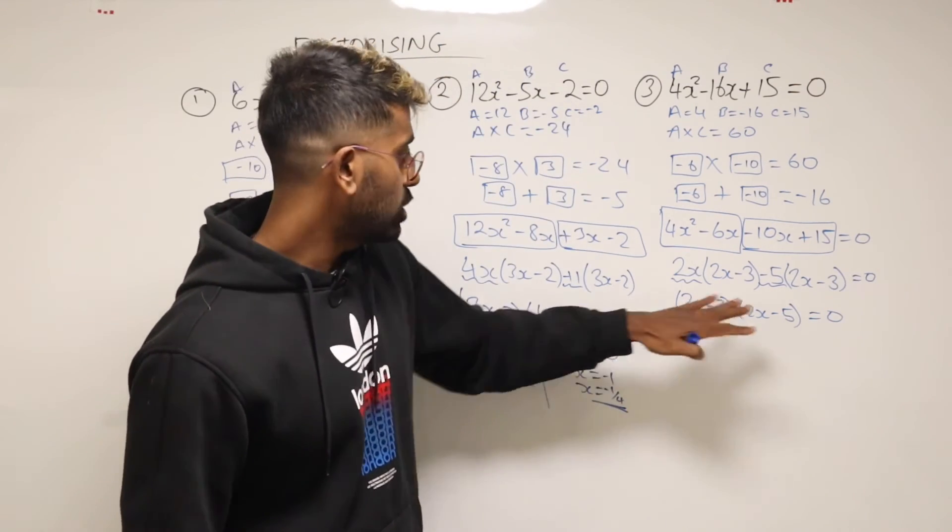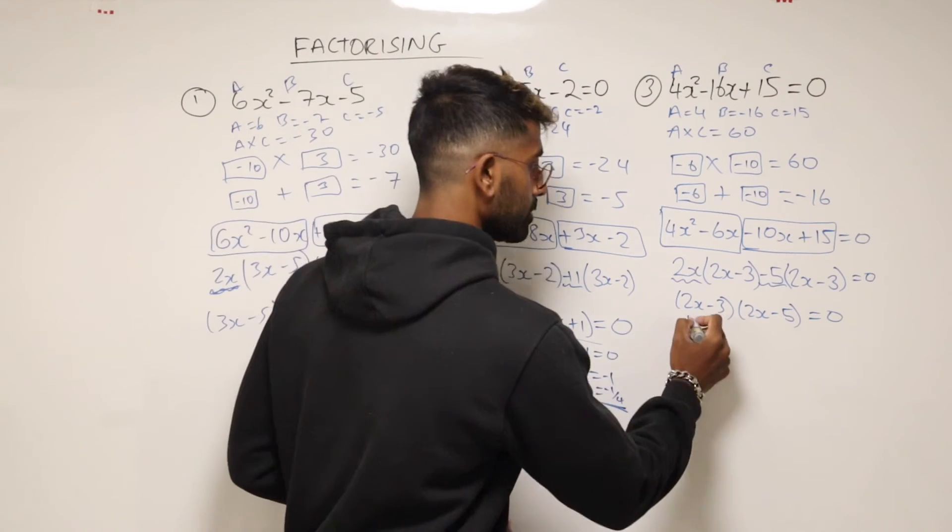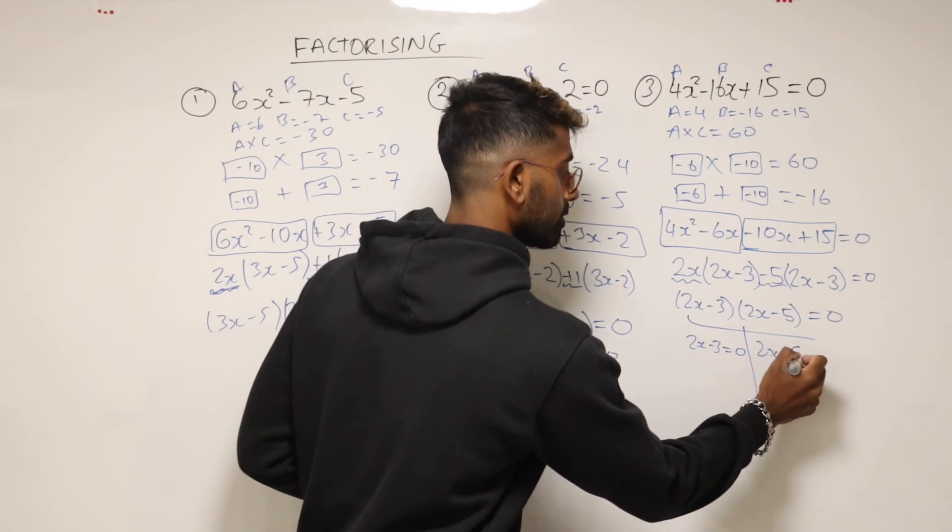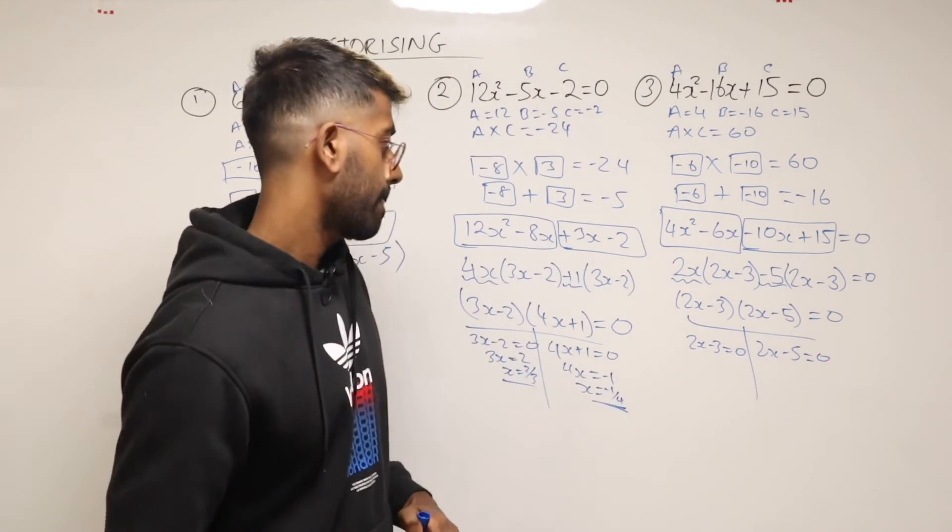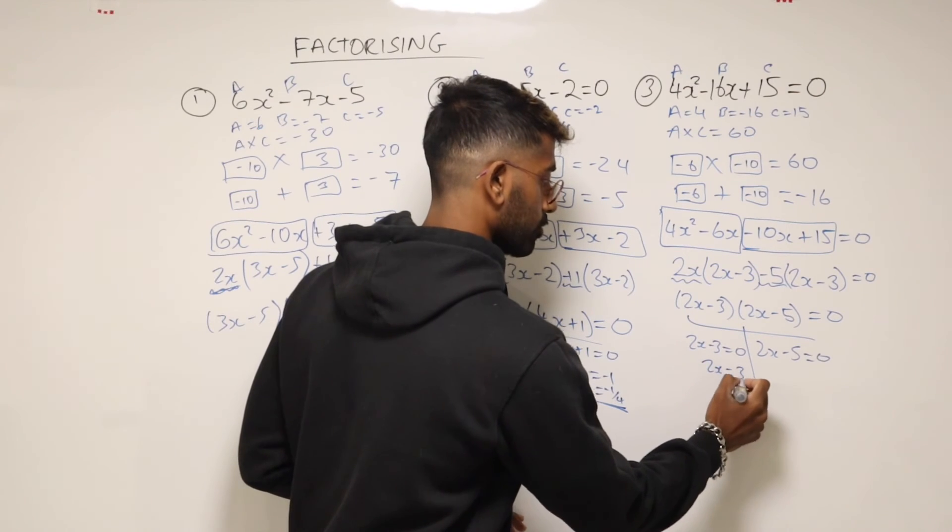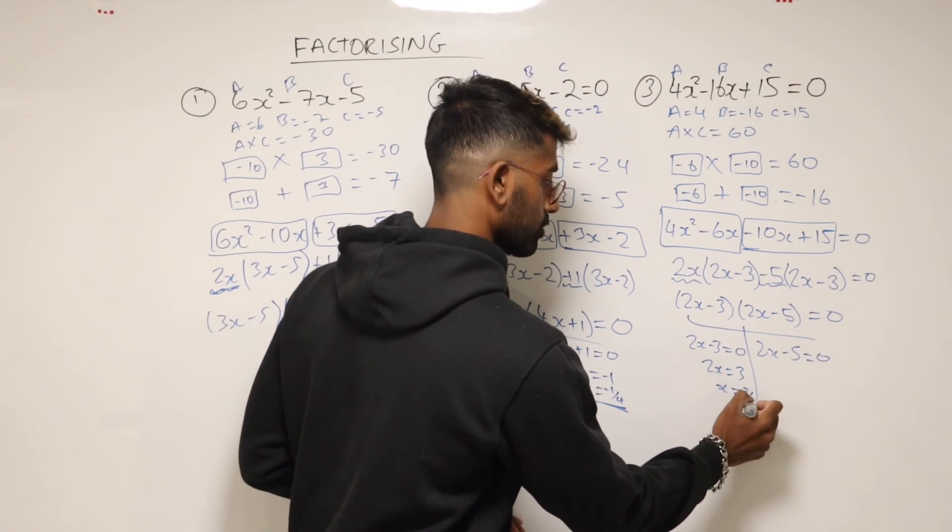And now to solve it, take each of your factors and equal them to zero. So you've got 2x minus 3 is zero. 2x minus 5 equals zero. For this one, send the minus 3 over. So you have 2x is equal to 3. And then x is equal to 3 over 2.